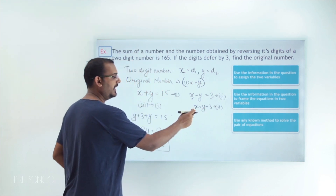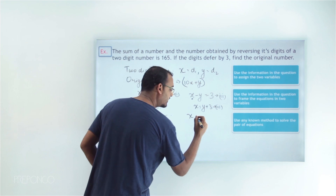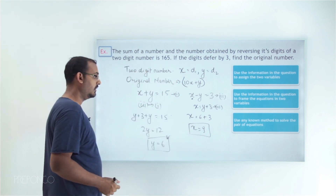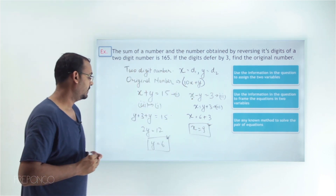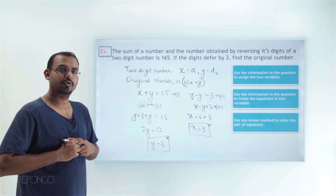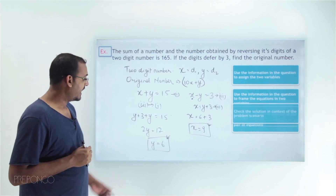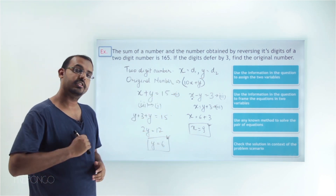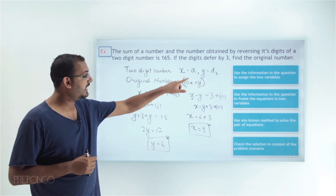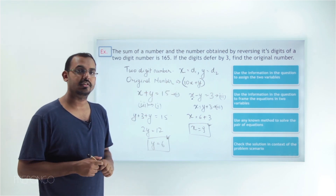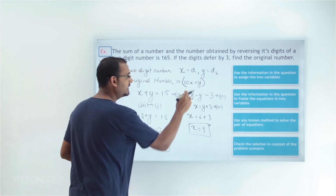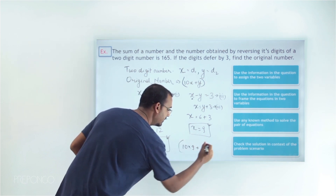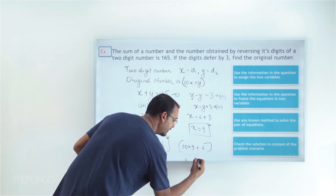Now I can use this value of y, which is 6, and put it into equation 3 to get the value of x. Equation 3 tells me x equals y plus 3. Since y is 6, x equals 6 plus 3, which gives x equals 9. Now I have the values of x and y. Since x is the first digit and y is the second digit, the original number is 10x plus y, which is 10 times 9 plus 6, giving the original number as 96.